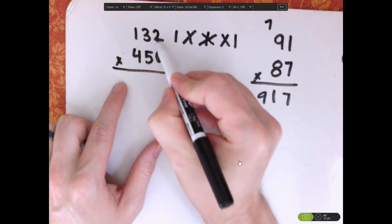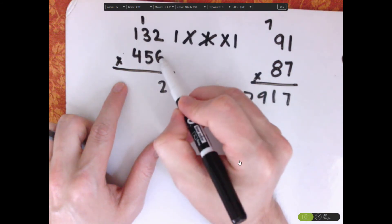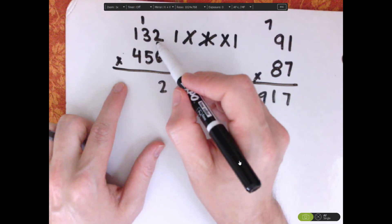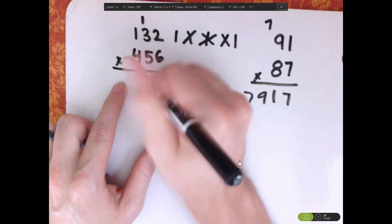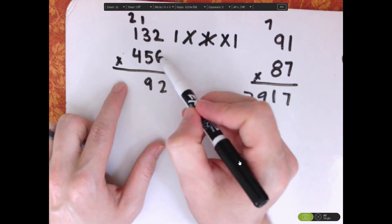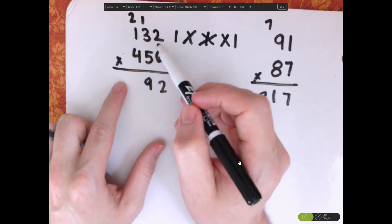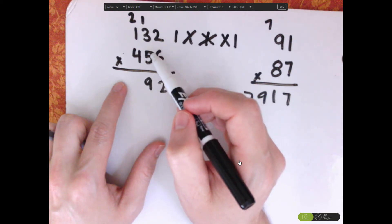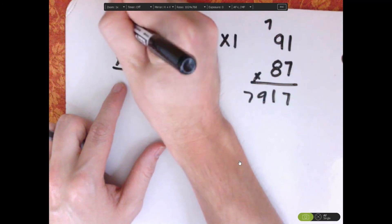So, 2 times 6 is 12, carry the 1, 6 times 3 is 18, 5 times 2 is 10, 18 plus 10 is 28, plus 1 is 29, carry the 2. So, 6 times 1 is 6, 15 and 8, so that's 14 plus 15 is 29, 29 plus 2 is 31, carry the 3.